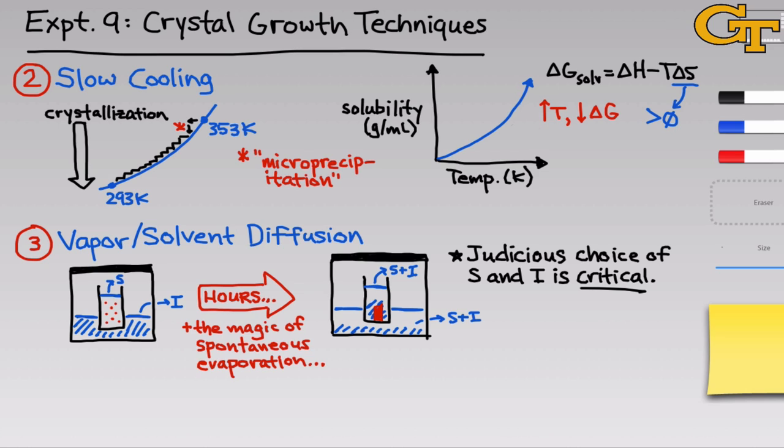The proper choice of the soluble and insoluble solvents here is critical. So before we undertake this vapor diffusion experiment, we'll do solubility tests using the solute and a series of candidate solvents to determine which ones would be best to use in this case. Just remember that we need one solvent in which the solute is soluble and one in which it's insoluble.